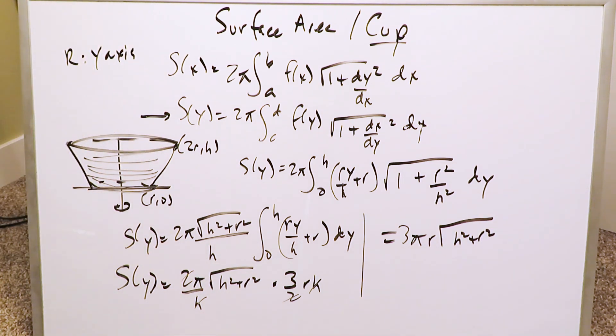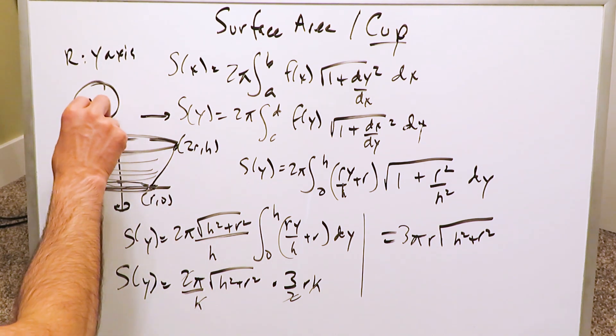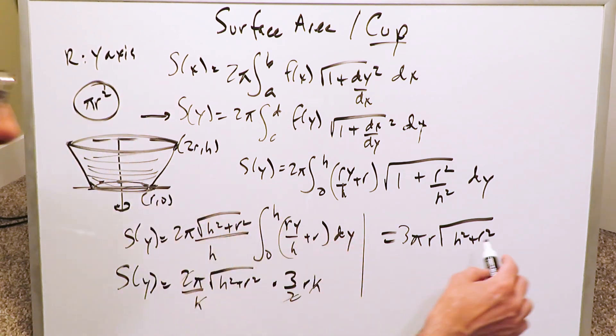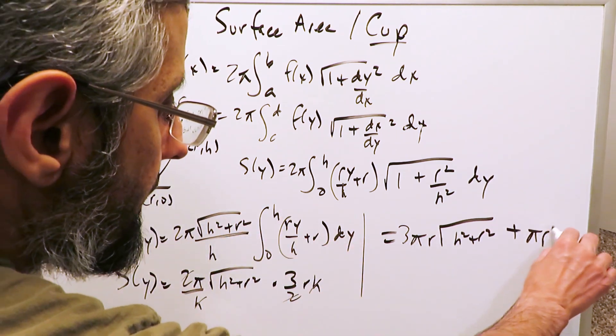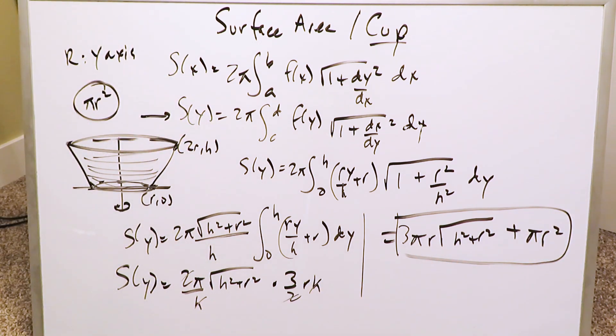But if you account for only the external lateral surface area, you're skipping the part here on the bottom. The part here on the bottom would represent a circle in terms of appearance. And that circle would definitely be part of your external surface area having an area πr². And you can just add that in right there.